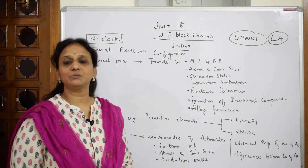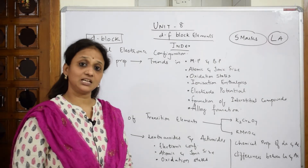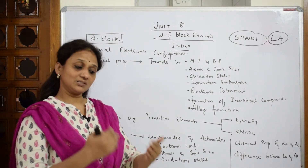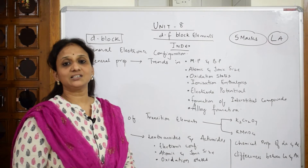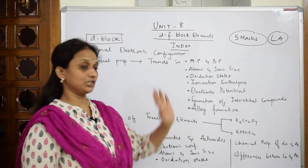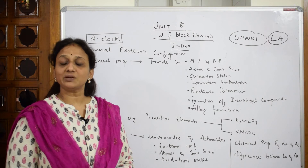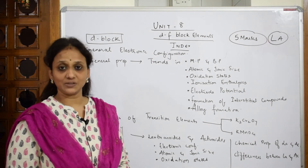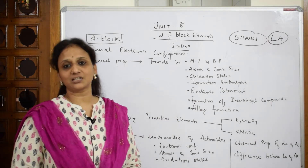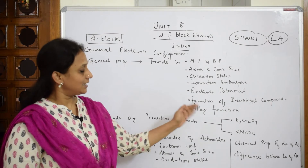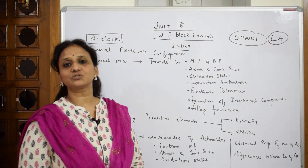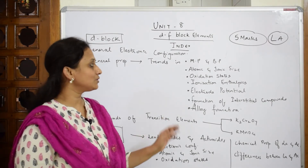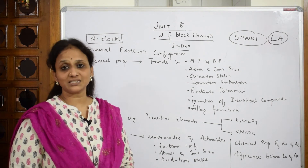We'll be studying the trends of ionization enthalpy — first and second ionization enthalpy, why one is less and the other more, and what is the reason for the irregular decrease. Next, electrode potentials: based on electrode potential values I'll teach you how to decide whether a particular metal is a reducing agent or not. We'll also cover formation of interstitial compounds and alloy formation — how two or more metals combine to form alloys.